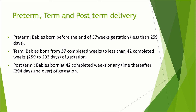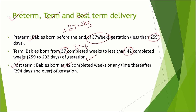We need to understand preterm, term, and post-term delivery. Preterm delivery means babies born before the end of 37 weeks of gestation — that is less than 259 days. Term babies are born after completing 37 weeks up to 42 completed weeks of gestation. Post-term pregnancy means babies born at 42 completed weeks or any time thereafter. So less than 37 weeks is preterm, 37 to 42 is term, and greater than or equal to 42 weeks is post-term.